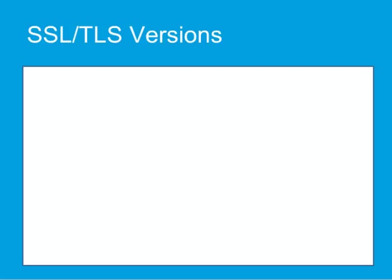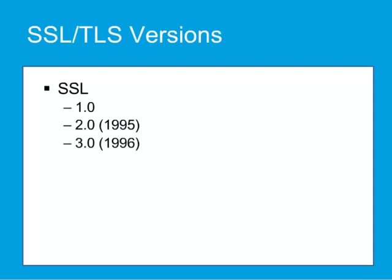Netscape developed the original SSL protocol. Version 1 was never publicly released because of serious security flaws in the protocol. Version 2, released in 1995, also contained a number of security flaws. SSL version 3, released in 1996, represented a complete redesign of the protocol.